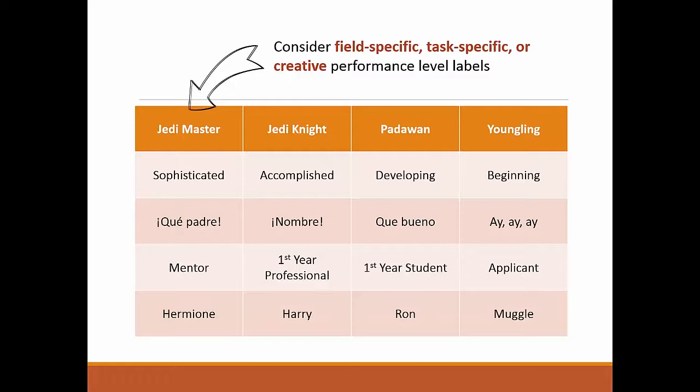And sometimes a little shift in our own perspective doesn't hurt. Don't be afraid to consider field-specific labels for your performance levels. What student would want his work to be considered that of a first-year student when he really wants to be a mentor? Or task-specific labels — what if you were reviewing Star Wars in your film studies class? Wouldn't you want your work to be right up there with Yoda? What if you were studying children's literature, specifically Harry Potter? Who would want to be Ron when you could be Hermione?